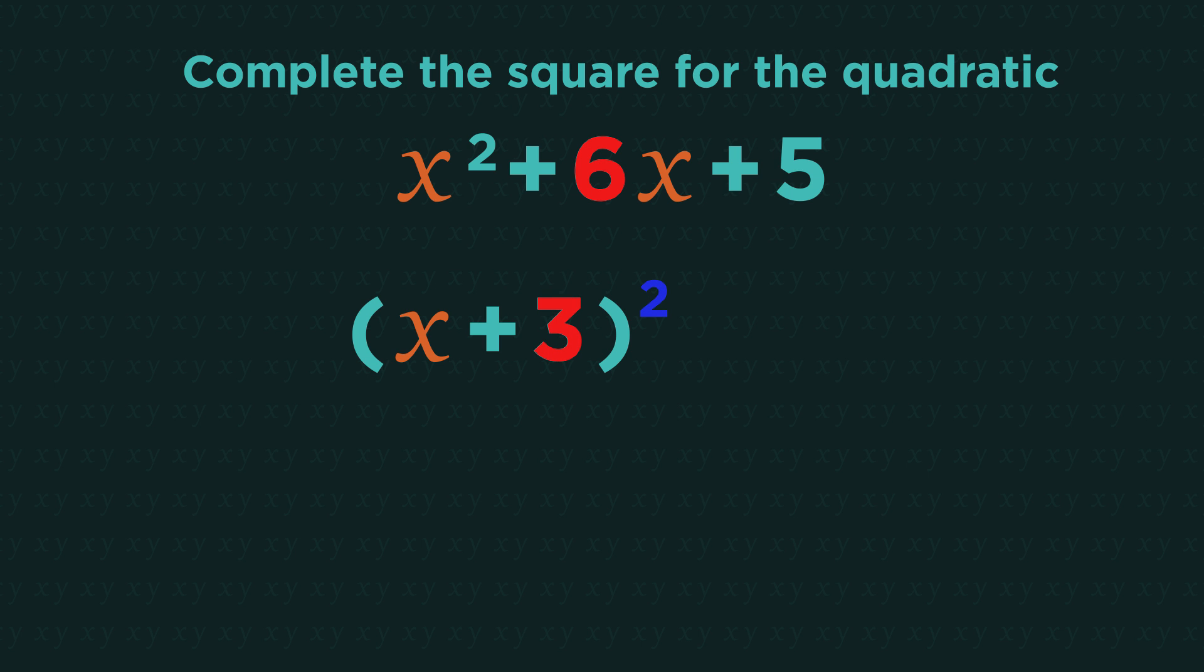Square the bracket, so x plus 3 squared minus 4. And because 3 squared is 9, we need to subtract 9. Then bring the 5 down from the question. So we get x plus 3 squared minus 4. And we've completed the square.